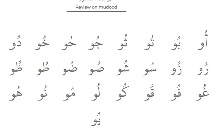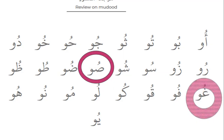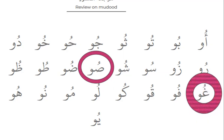Can you tell me, what is this? Saad, waw, mad — it's what? Yes — su. Gu. What is this? Gu. Waw, mad — gu. Yes, very good.